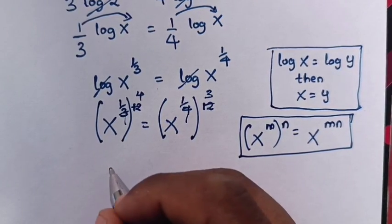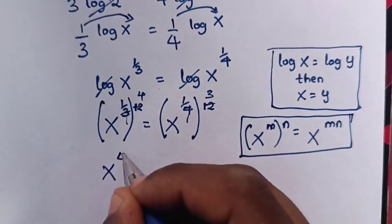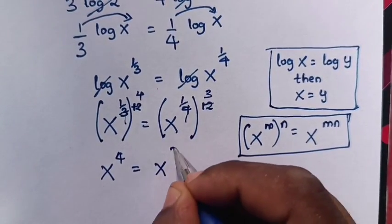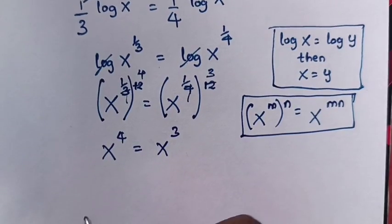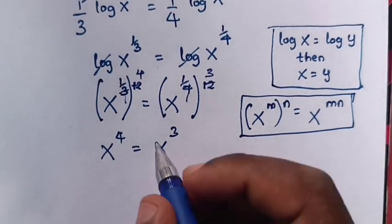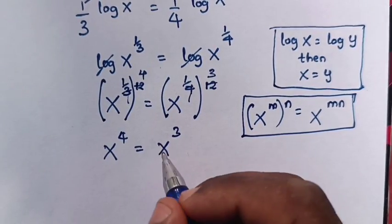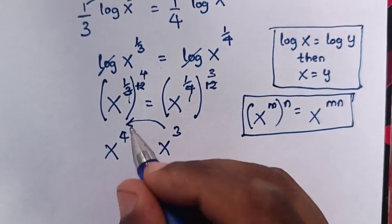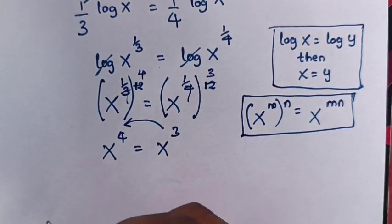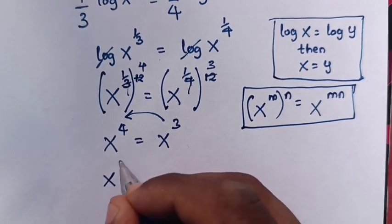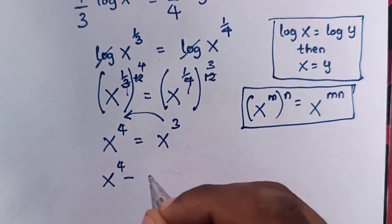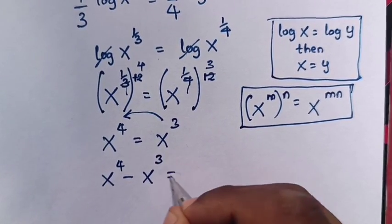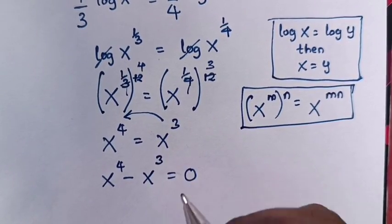So our equation will be x power 4 is equals to x power 3. Then we take x power 3 to the left side, so it will be x power 4 minus x power 3 is equals to 0.